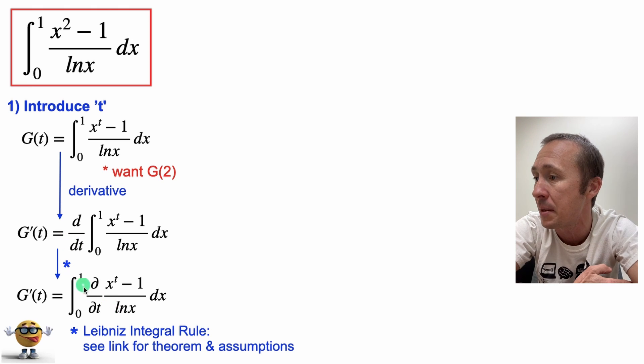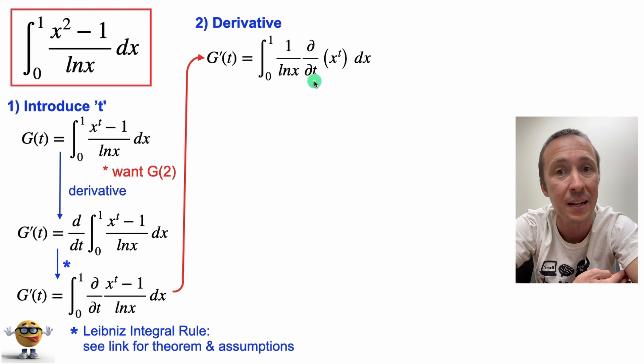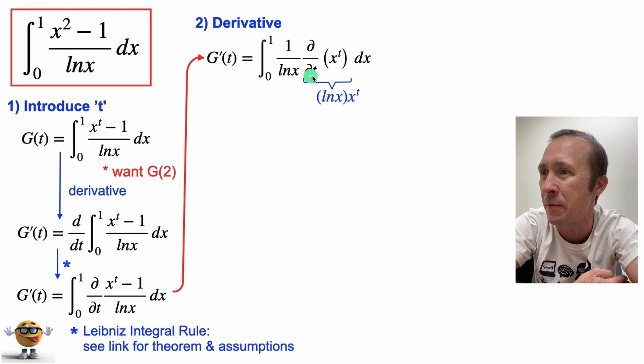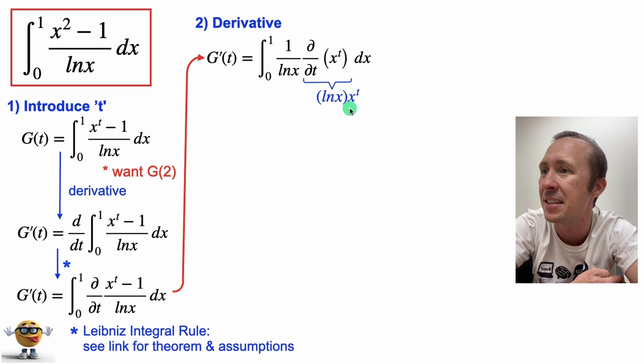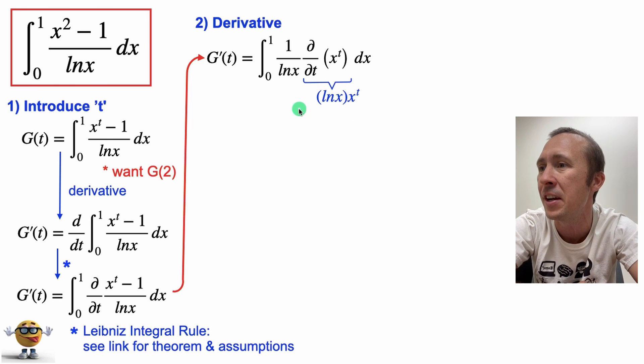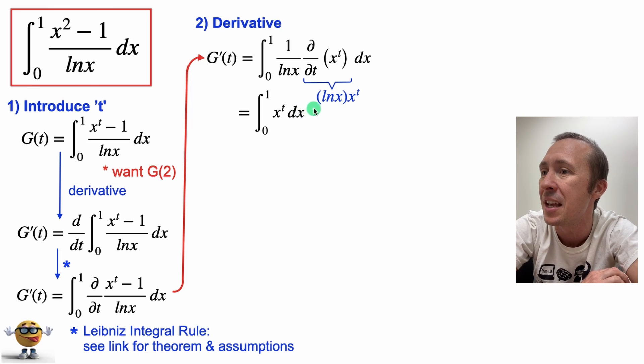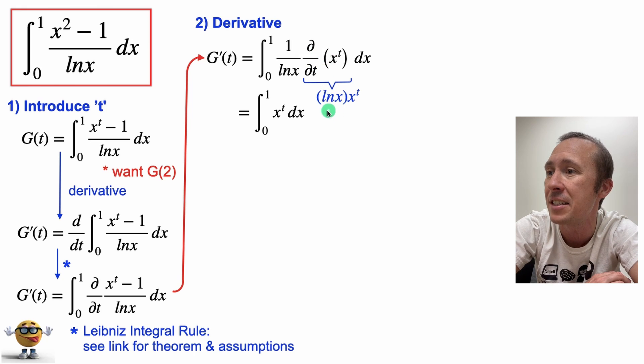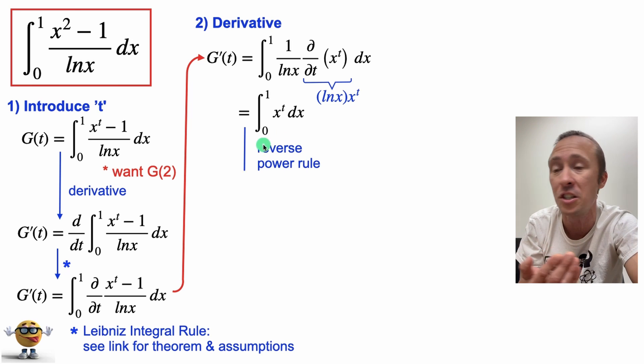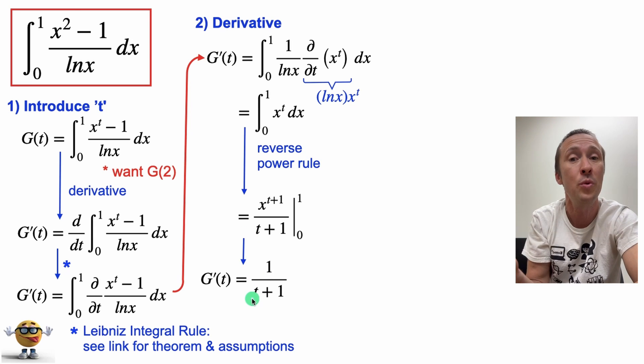We bring it inside and it becomes a partial derivative. This partial derivative is not too bad because ln x just comes out. The derivative is ln x times x to the t. This is like a calc 1 derivative here. And my friends, this is the whole point—one of the reasons why we did the derivative was because after we do the derivative, this ln x here cancels out with the ln x in the denominator. We're left with this super easy integral that we can use the reverse power rule on. After we plug in our limits, we've done an integral.